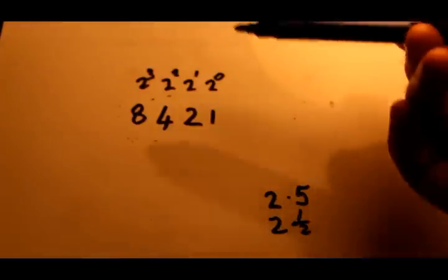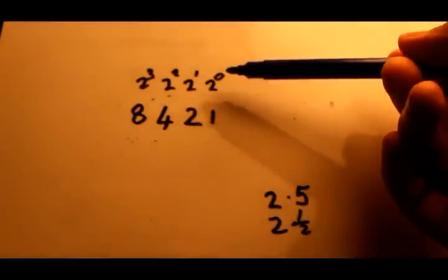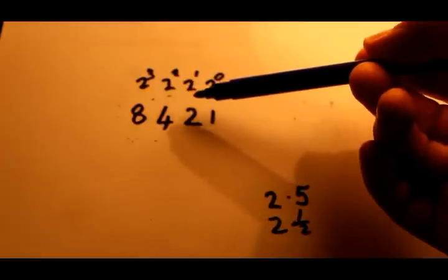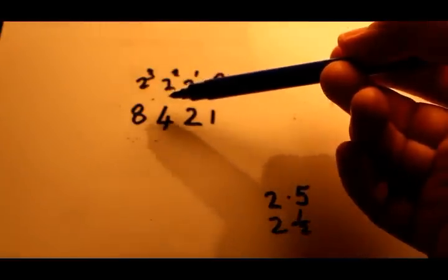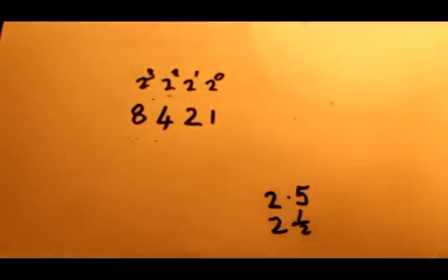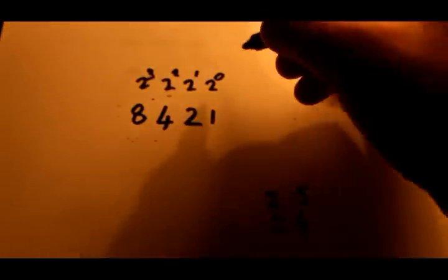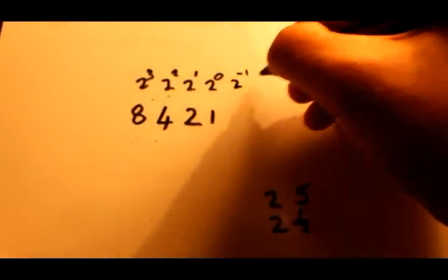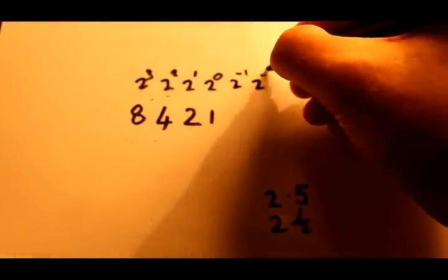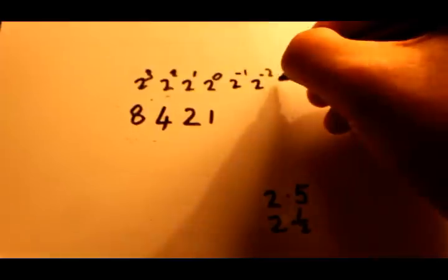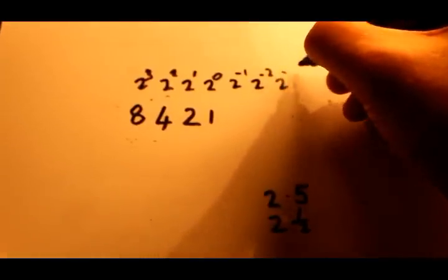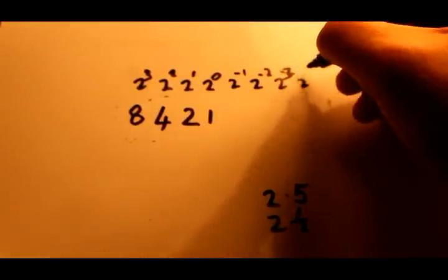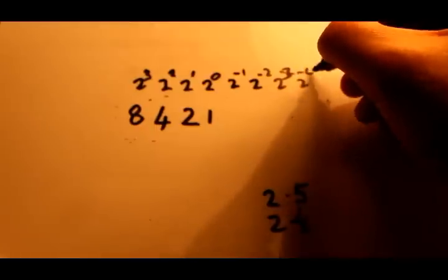Think about it: 2 to the power of 0 and 2 to the power of 1 — that is doubling the number: 1 to 2, 2 to 4, 4 to 8. So equally, it's logical that we can go the other way. What I'm going to do is put 2 to the power of minus 1, 2 to the power of minus 2, 2 to the power of minus 3, and 2 to the power of minus 4.